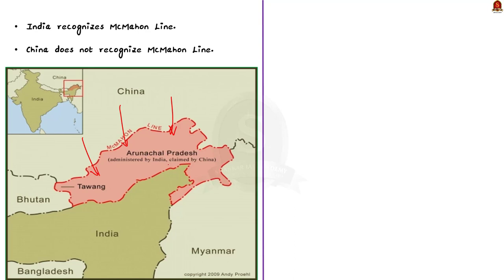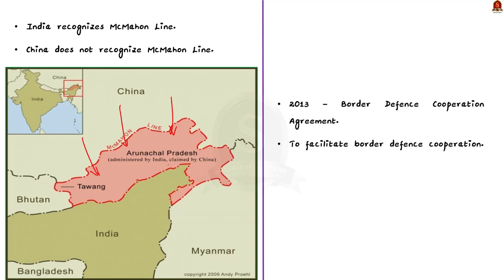Through this discussion, we have learned about the Line of Control, the Line of Actual Control, and the McMahon Line.